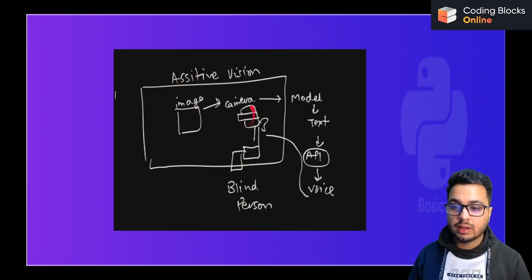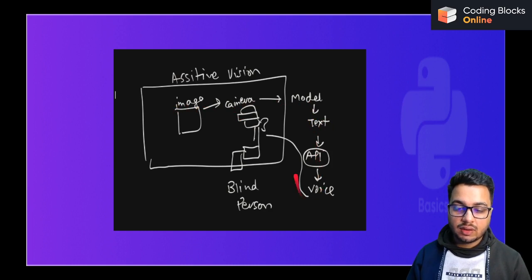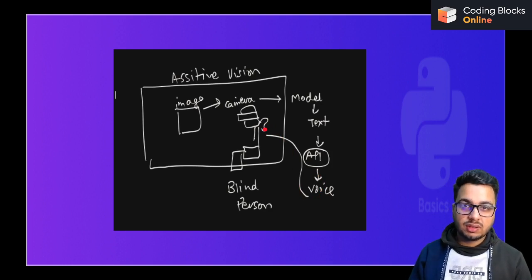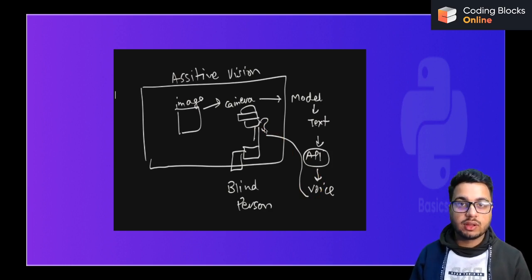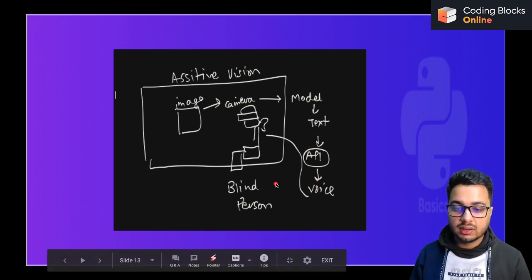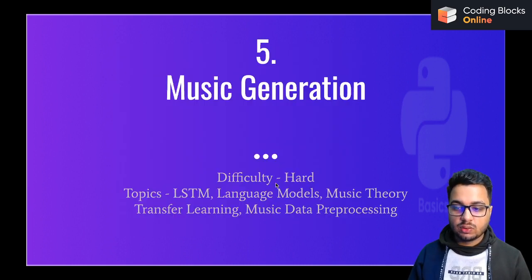One application you can build is assistive vision for a blind person. Fix a camera on the forehead of a blind person — the camera captures the image and sends it to the model, which generates text. You can then use an API such as the Google Text-to-Voice API to convert that text into speech, which goes into the ear of the blind person. So if a dog is crossing the road in front of them, the camera will capture the image and the model will describe what is happening in the scene. You can also use this as a hackathon project.